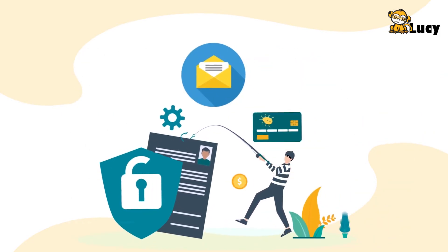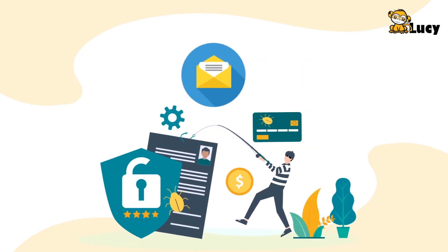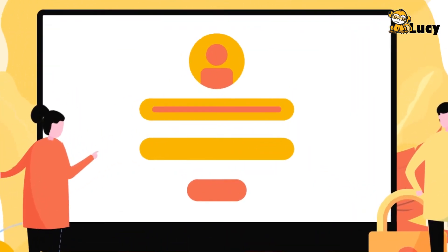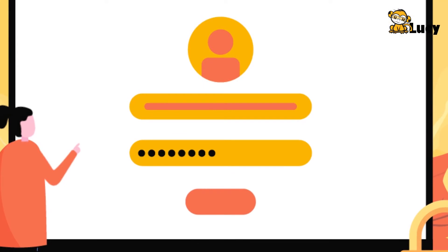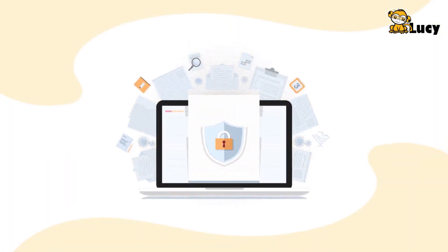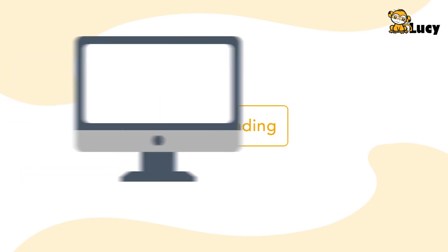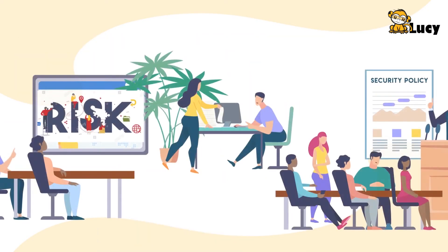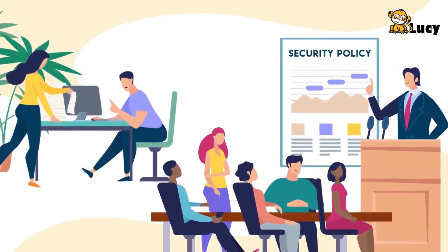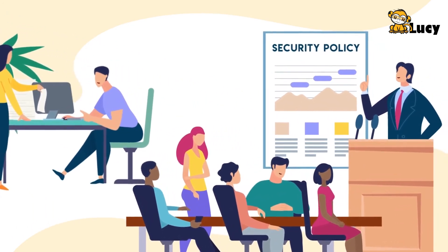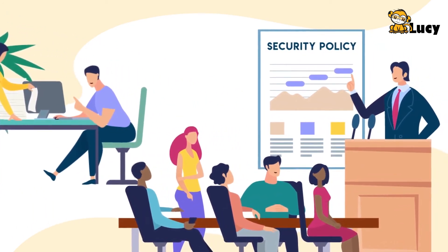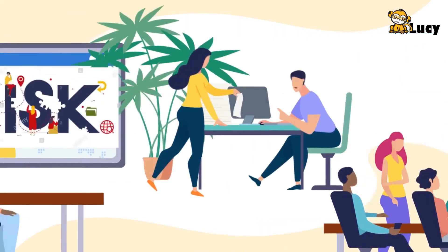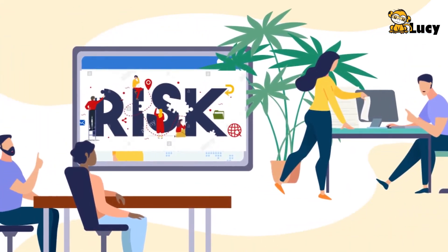The greatest human-induced risks fall in these categories: opening suspicious URLs or email attachments, using easy-to-guess passwords and keeping them in plain sight, inadequate handling of sensitive data, and downloading harmful files from the internet or removable devices. As a manager, you must make sure that your staff is adequately informed about their security responsibilities when it comes to handling sensitive data and using company systems.